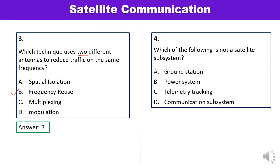Question 4: Which of the following is not a satellite subsystem? Options are ground station, power supply, telemetry tracking, and communication subsystem. Power system, telemetry tracking, and communication subsystems are all parts of a satellite subsystem. Ground station is the odd one out — it is not part of the satellite subsystem. Answer A is correct.